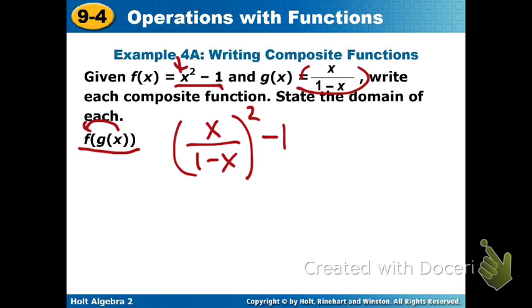And I'm just going to maybe kind of clean this up a little bit. I'm going to distribute my square. So I would have x squared over the 1 minus x in parentheses squared minus our 1. So this would be the function f of g of x using your algebraic expressions.